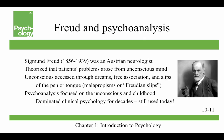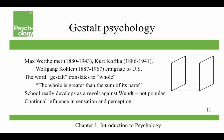Sigmund Freud — many people think Freud is psychology, but he was actually an Austrian neurologist. He theorized that his patients' problems arose from their unconscious, which could be accessed through dreams — what he called the royal road to the unconscious — free association, and slips of the pen or tongue, called malapropisms, or Freudian slips. Psychoanalysis focused on the unconscious mind in childhood. It dominated clinical psychology for decades and is still used today. What Freud would say he's really doing is studying the dynamics of the unconscious.